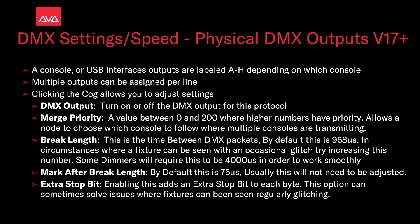Multiple outputs can be assigned per line. Clicking the cog icon allows you to adjust the settings. DMX output: turn on or off DMX output for this protocol. Merge priority: a value between 0 and 200, where higher numbers have priority. It allows a node to choose which console to follow when multiple consoles are transmitting. This is used in conjunction with DMX node settings — see our video on that, link in the description.